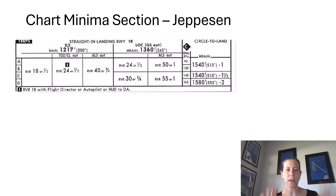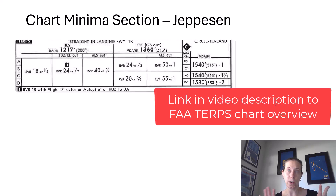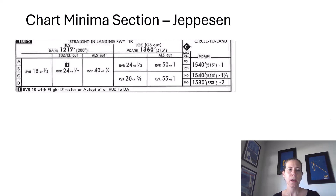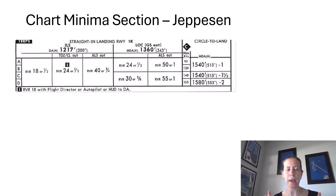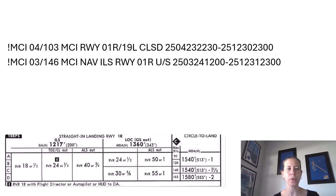This video is going to focus on the minimums section. If you want a totally different interpretation of chart minima, I've got another overview video specific to FAA charts. But for this purpose, we're going to focus on Jeppesen because that's what pretty much every airline in the United States is presently using. There are a bunch of boxes on here that apply to various NOTAMs, so let's look at a couple of NOTAMs.